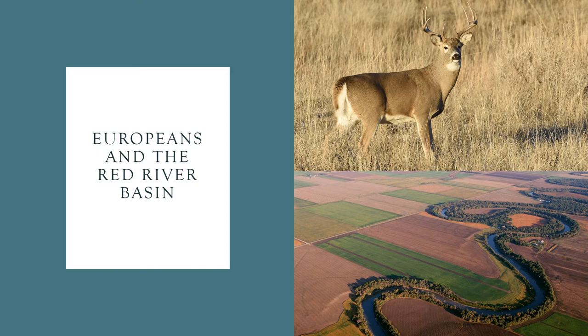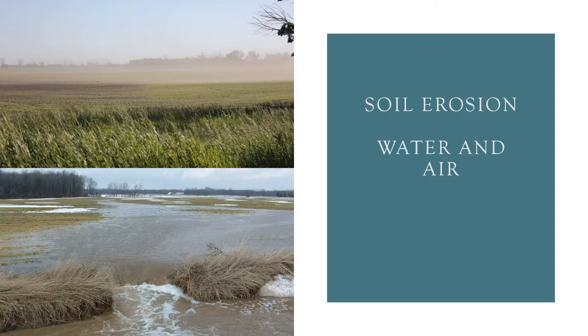Before the arrival of Europeans, the Red River basin was largely dominated by prairies interspersed with stands of riparian forests. This native vegetation has a thick root system that tends to hold the soils in place and resist surface erosion. However, as the Europeans arrived and realized the incredible productivity of these soils, the prairies and riparian forests were quickly replaced with annual crops that had shallower root systems less effective in holding the soil in place.